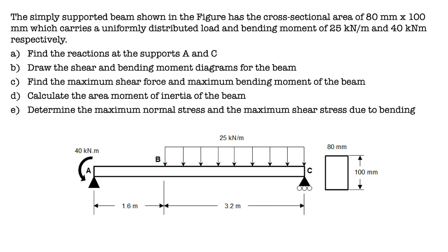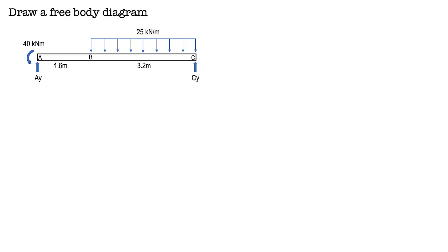Here we have a bending moment at A, a distributed load along BC, and two concentrated loads at the supports A and C. To solve this problem, first we have to draw a free body diagram of the whole beam. We remove the supports at A and C and replace them with the reaction forces.